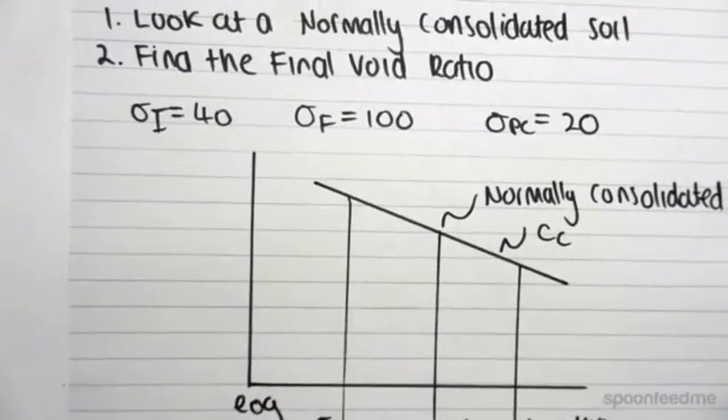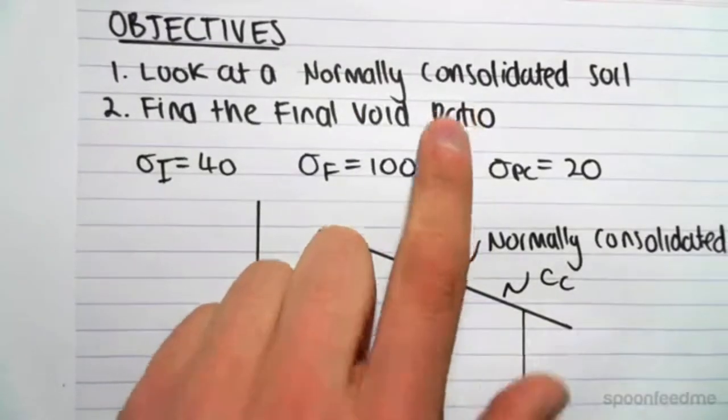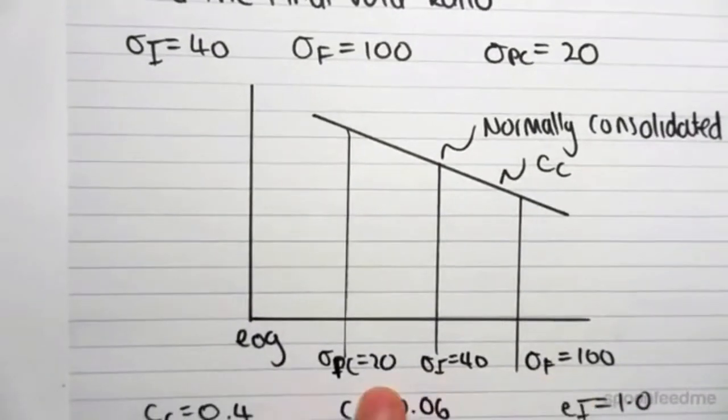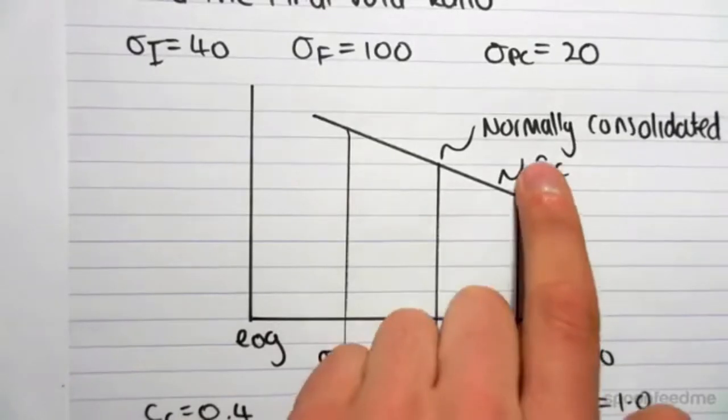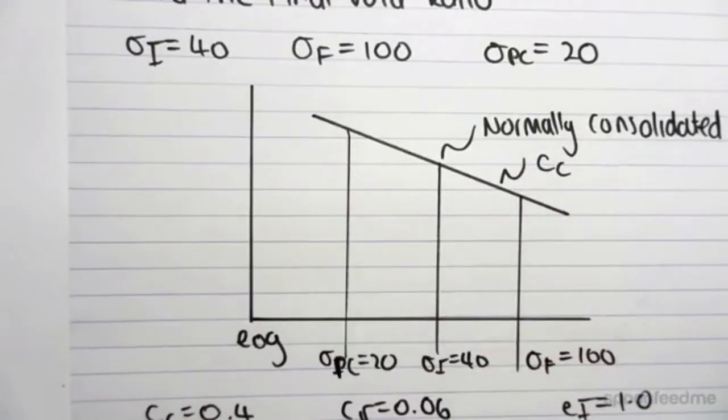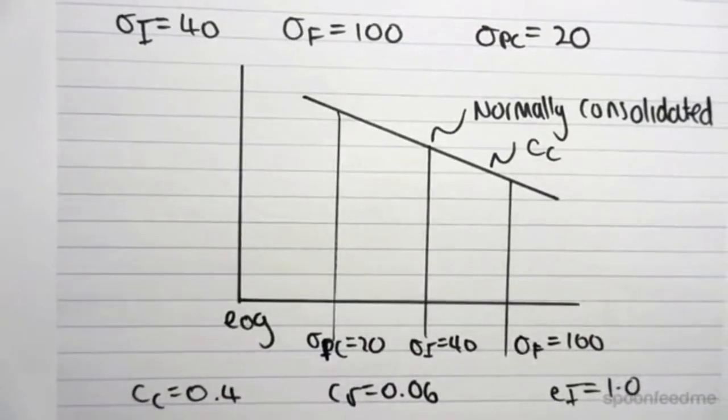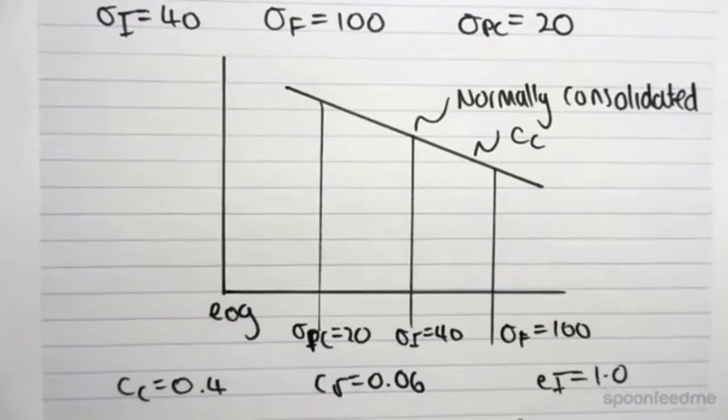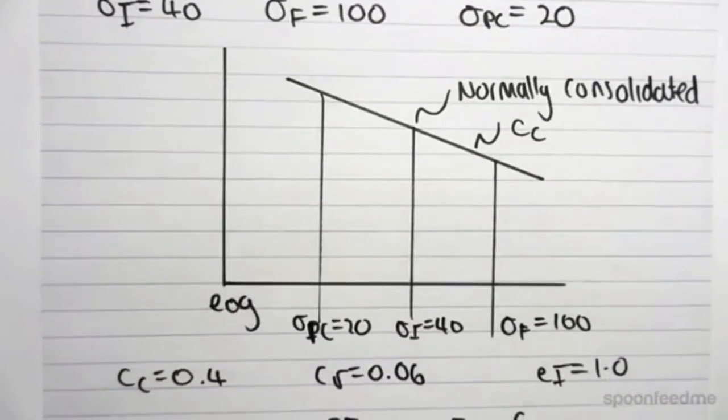So once again, this is how you would do it for a normally consolidated soil, when your initial and final effective stresses are both larger than the pre-consolidated stress, in contrast to an overconsolidated soil which we did in the previous video, where the pre-consolidated stress was the maximum. In the next example, we're actually going to be doing a combination of normally consolidated and overconsolidated. So that example will hopefully reinforce the two ideas we've learned in the two previous videos. I recommend you check that out. Hope that helps.